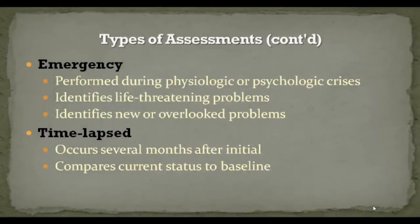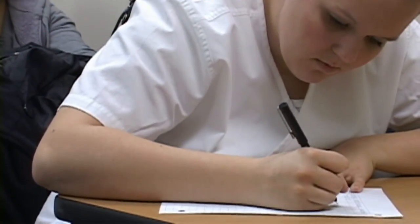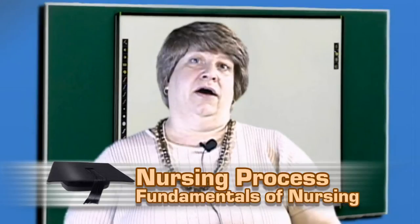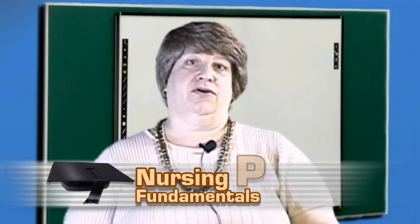The emergency assessment is performed during physiologic or psychological crisis and is tailored to the individual's situation. It is used to identify life-threatening problems and also new or overlooked problems. The fourth type is the time-lapsed assessment, done at an interval — several months after the initial assessment — to compare the individual's current status to the previous baseline. Collecting data involves gathering information about a client's health status; it must be both systematic and continuous, addressing past history as well as the current problem.